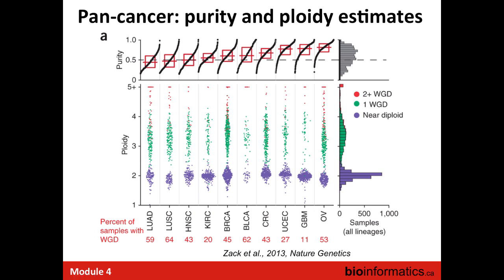Taking this approach and looking at purity and ploidy across 5,000 cancers, it turns out that over a third of all cancers have a ploidy greater than 4, meaning they must have undergone a whole genome duplication event at some point in their evolutionary history. Across 12 different kinds of cancers and a range of different purities, there's a significant proportion of diploid tumors (the purple samples, ploidy of two), but more than a third have undergone at least one genome duplication, and a minority have undergone more than one. There's compelling evidence that genome doubling events actually happened fairly early in tumorigenesis.